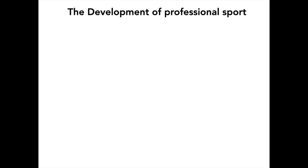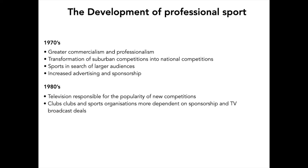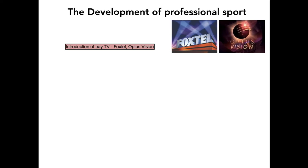We begin by looking at the development of professional sport. In the previous video we looked at how sport has changed over time, particularly in the 19th century. But from the 1970s onward we saw far greater commercialism and professionalism in sport, shown through the transformation of suburban competitions into national competitions. Sports like the AFL and the National Rugby League were searching for larger audiences, and there was an increased presence of advertising and sponsorship. In the 1980s, television played a much bigger role in broadcasting sport, and clubs became more dependent on sponsorship and TV broadcast deals to pay their players.